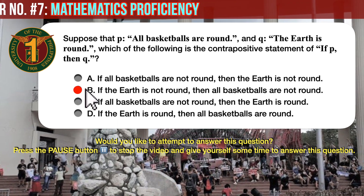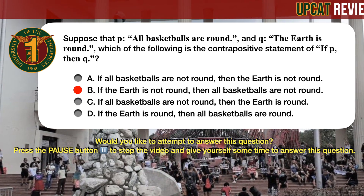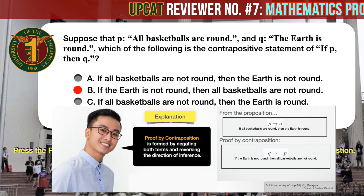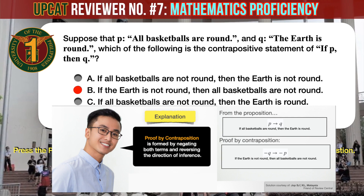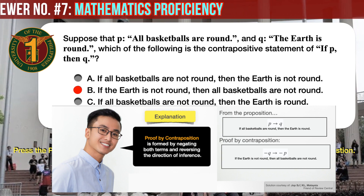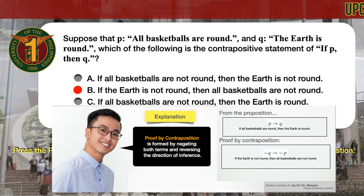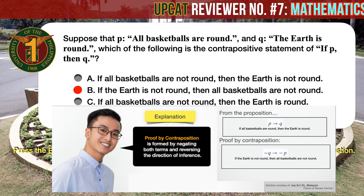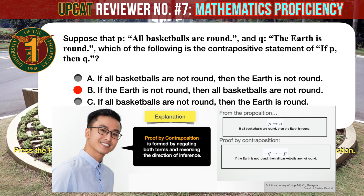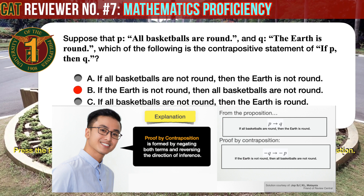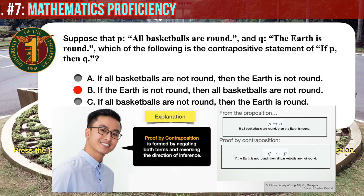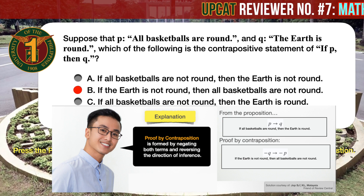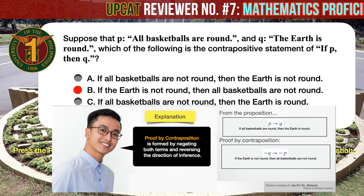The correct answer is B. The contrapositive statement of 'if P, then Q' is: if the earth is not round, then all basketballs are not round. The contrapositive statement is formed by negating both terms — P and Q — and reversing the direction of inference. So first we negate both statements: 'all basketballs are round' becomes 'all basketballs are not round,' and 'the earth is round' becomes 'the earth is not round.' Then we reverse the direction of inference. In the original statement, P came first and Q follows. In the contrapositive, it goes the other way: if the earth is not round (not Q), then all basketballs are not round (not P).